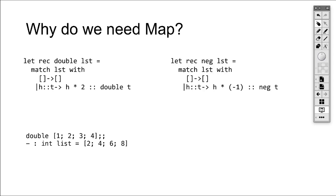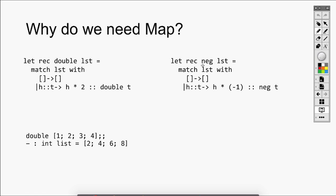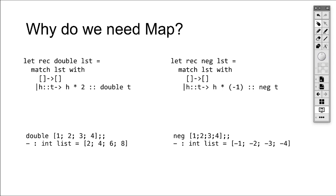Let's look at another example. This example is a negate function. Negate takes a list as an argument and negates every single item in the list. Similar to the double function, if the list is empty, we return an empty list. If the list is not empty, we split the list into head and tail, process the head and recursively process the tail and put them all together again. If we apply the negate function to [1, 2, 3, 4], we'll get [-1, -2, -3, -4].